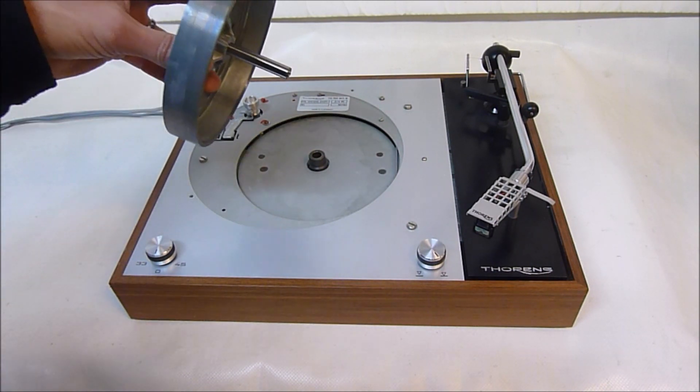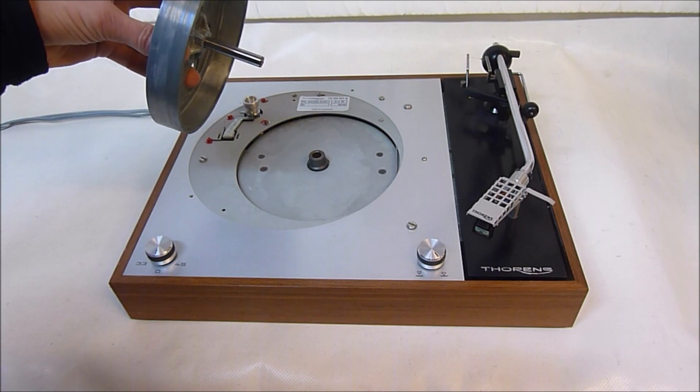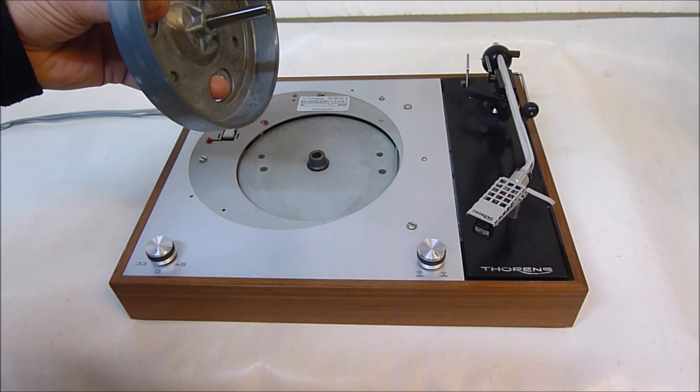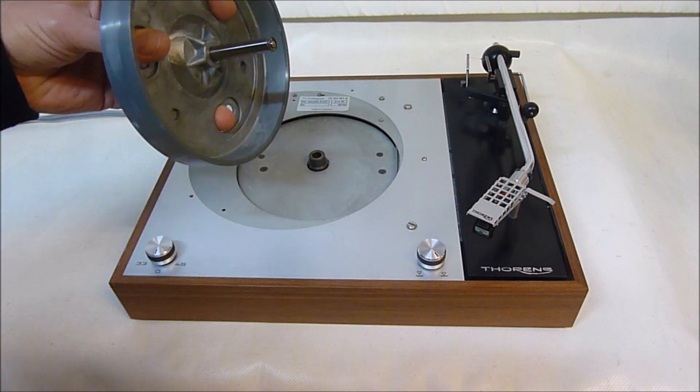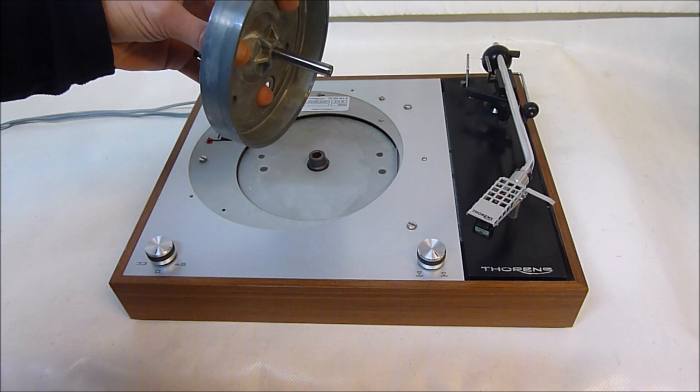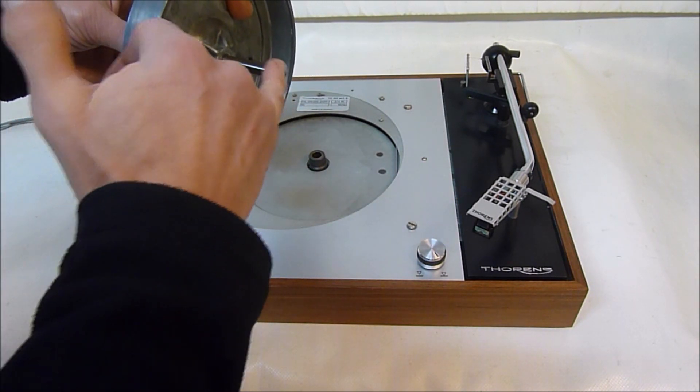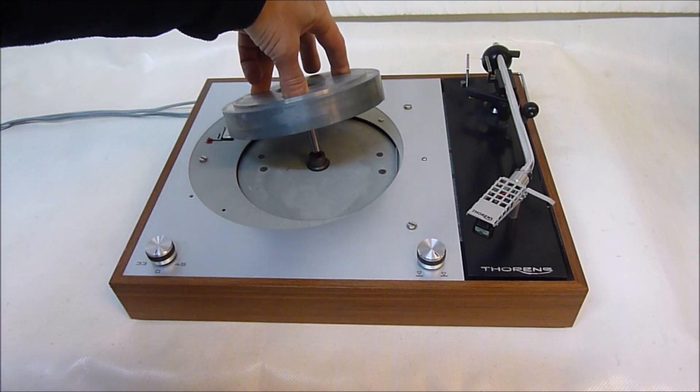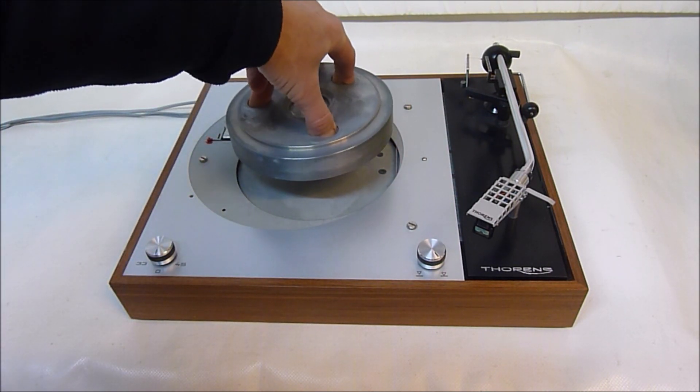Before it gets reassembled, a bit of light oil such as sewing machine oil is all that's required, just at the bottom end of the bearing there. But this is fine, this is very encouraging, and it just settles down nicely.